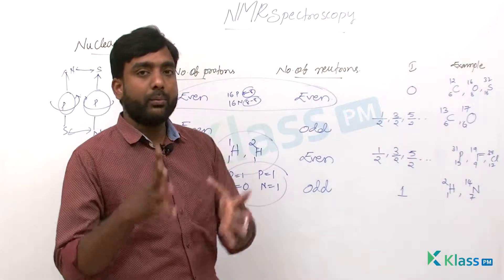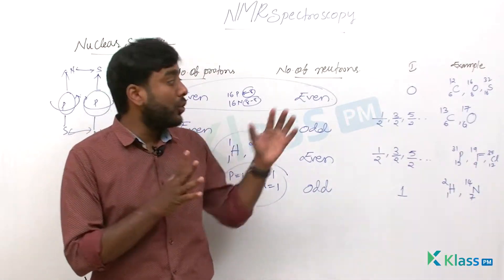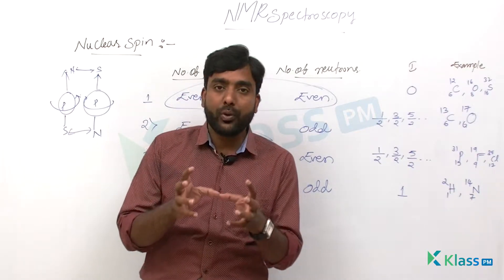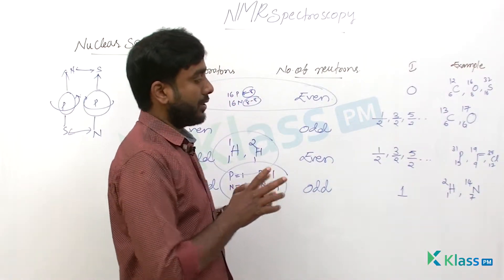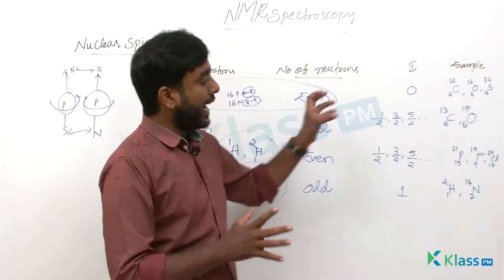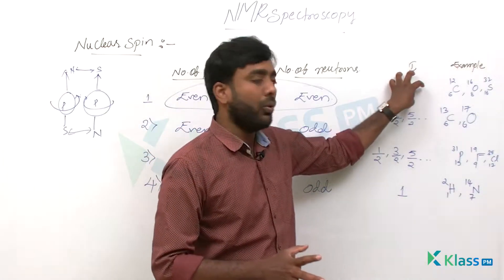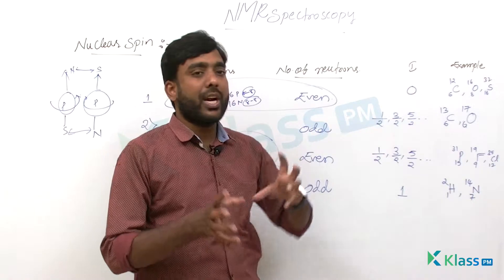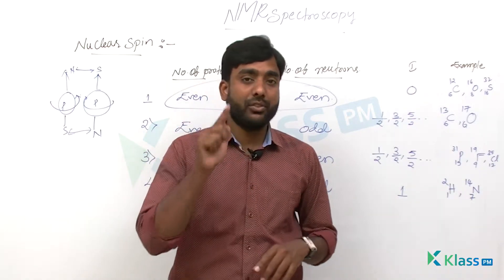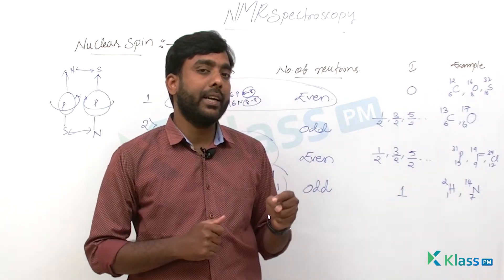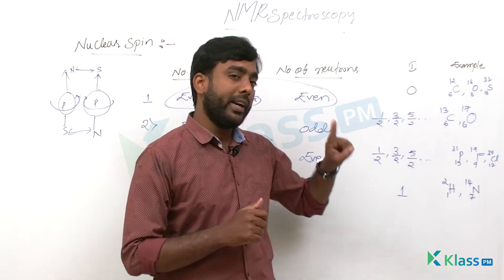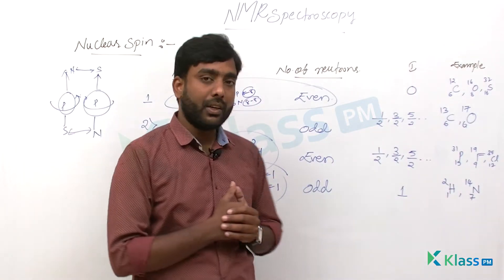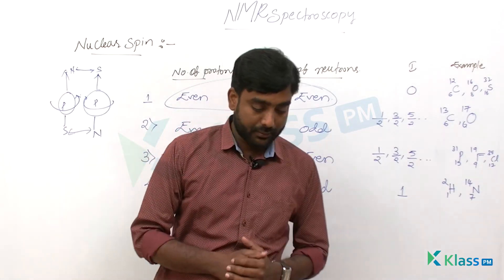The next point is: why is I equal to 0, or why are some nuclei NMR inactive? Nuclei which have their spin quantum number I equal to 0 are NMR inactive. If I is 0, they are inactive — but the detailed explanation for why this is the case will be covered in a further class.